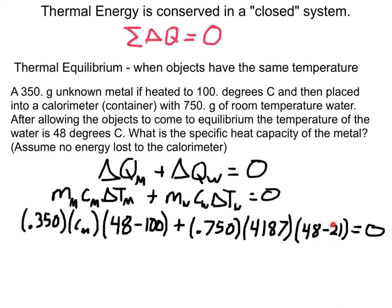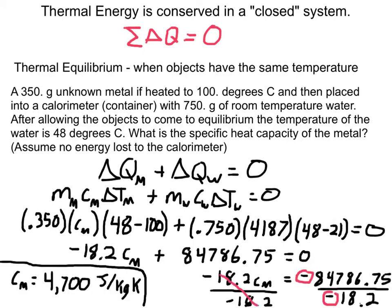So now I'm just going to go ahead and start plugging things through the calculator. So I come out with a specific heat for the metal of 4,700 joules per kilogram Kelvin, two sig figs because of my 48 degrees here, even though I had 3, 3, 3, 2 sig figs there, so I can only go to two significant figures.